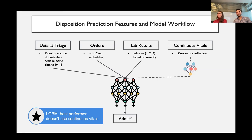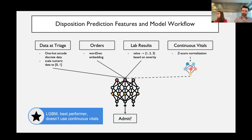Going more specifically into the types of data we have — we've broken it down into four kinds. First is data available from the patient at triage, containing both discrete and numeric data. Discrete data includes chief complaints and sex, encoded with simple one-hot encoding. Numeric data like age and vital signs at triage are scaled to the zero-one range. The second type is the different orders — imaging studies, medications, nursing communications, lab tests — for which we use a Word2Vec embedding, so orders that occur frequently together in a single visit will be embedded close together in the embedding space.